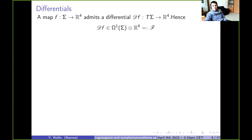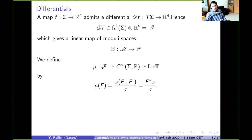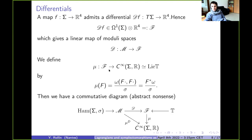Let me finish with my observation. To a map from Sigma to R4 you associate its differential — it gives a linear map between moduli spaces. Then you define mu, which will turn out to be a moment map, as follows: if f is the differential of a map, then mu is the symplectic density of this map — you compose omega with f, call it f-star of omega, and take the quotient with the volume form of Sigma. We have this commutative diagram: M with the Hamiltonian action, the differential map, the space of differentials, and the torus action on F via complex multiplication.